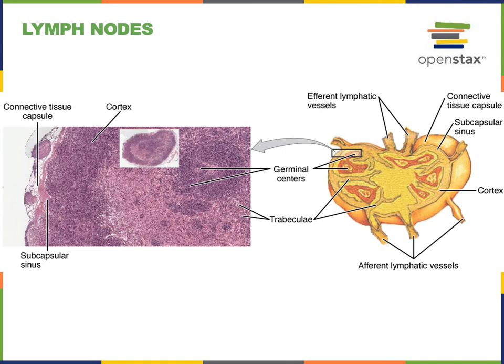Lymph nodes are small kidney-shaped organs clustered along lymph vessels that function to filter lymph. Lymph flows in through afferent vessels into the loose reticular connective tissue framework, or stroma, of the lymph node. The lymph flows through the cortex, then through the medulla, and out through the efferent lymphatic vessels. As lymph flows through the lymph node, leukocytes within the stroma can recognize and help defend against infection. There are numerous lymphocytes found within the germinal centers.